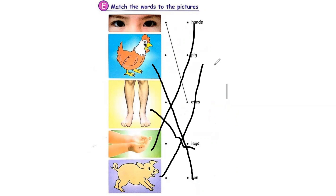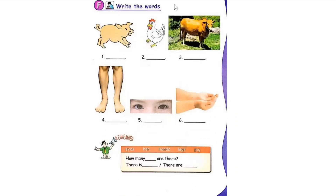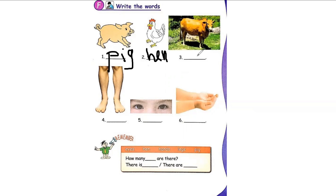Match the word to the picture. Write the word. Pick, spell. P-I-G. H-E-N. No. H-E-N, not hen that way. How? C-O-W. Yeah, C-O-W.